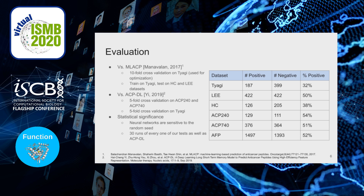Neural networks tend to be very sensitive to the random seed. To properly gauge the statistical significance of our results, we did 30 runs of every one of our tests, as well as those of ACPDL, because we had access to their code. When it came time to perform similar tests with MLACP, however, we did not have access to their code. Thus, we were only able to perform a simple t-test when comparing with MLACP and a paired t-test when comparing with ACPDL.